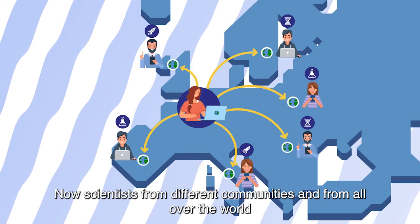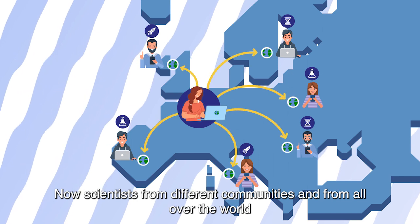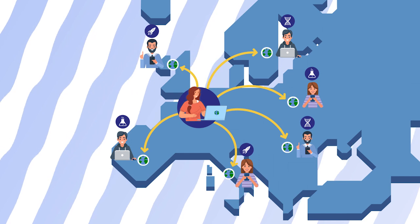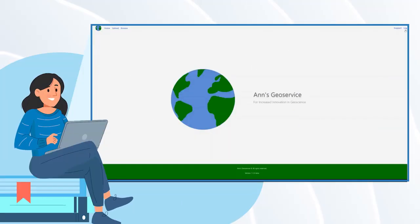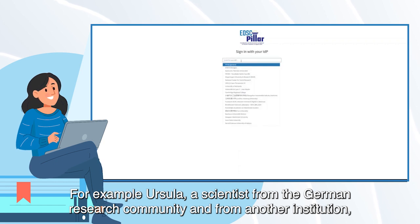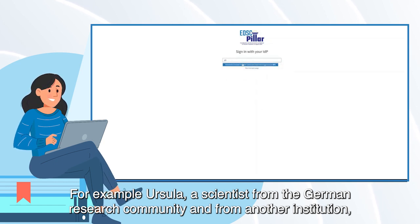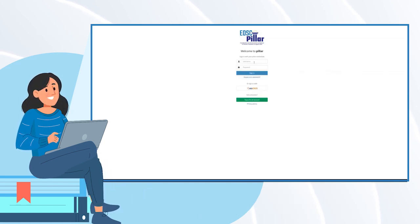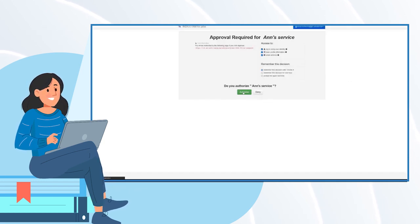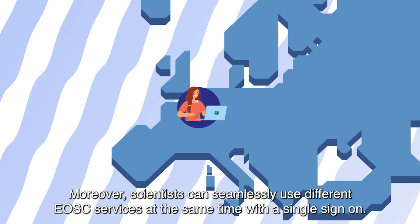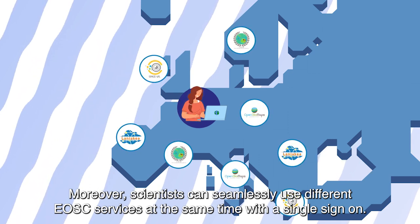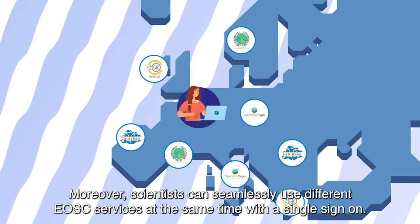Now scientists from different communities and from all over the world can access Anne's service without registration. For example, Ursula, a scientist from the German research community and from another institution, can log into Anne's service. Moreover, scientists can seamlessly use different EOSC services at the same time with a single sign-on.